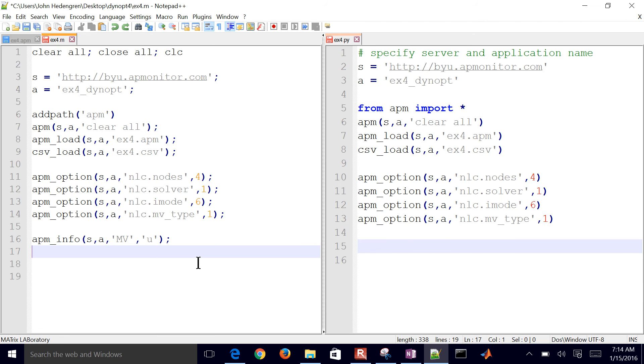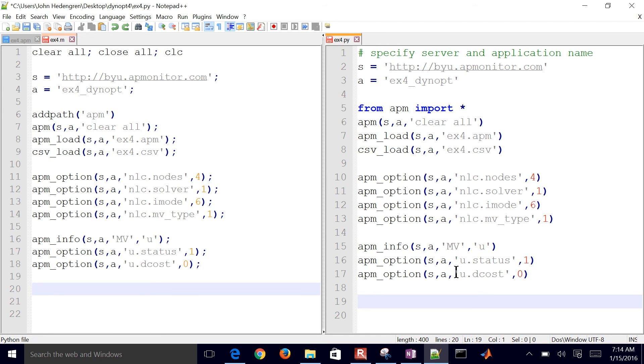So you can either have zero-order hold or first-order hold of your MVs. I'm going to define a new manipulated variable. In this case, my temperature, which I renamed as U in my file, but I could name that temperature as well. And then I'm going to turn the status on, and the DCOS, the delta penalty for moving temperature, is set equal to zero. By default, it's a small value, like 1 times 10 to the minus 5th.